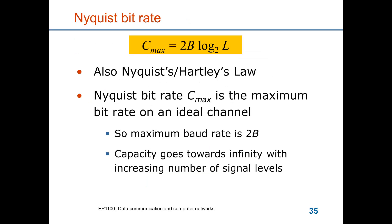The Nyquist bitrate, C_max, is the maximum bitrate on an ideal channel. The baud rate is limited to B, but l is not limited at all on a noiseless channel — you could have l going to infinity. The receiver would still be able to distinguish signal elements from one another, so you can increase capacity by using a larger set of signal elements. But in reality, noise makes signals indistinguishable from one another, and therefore there is a limit to this capacity.